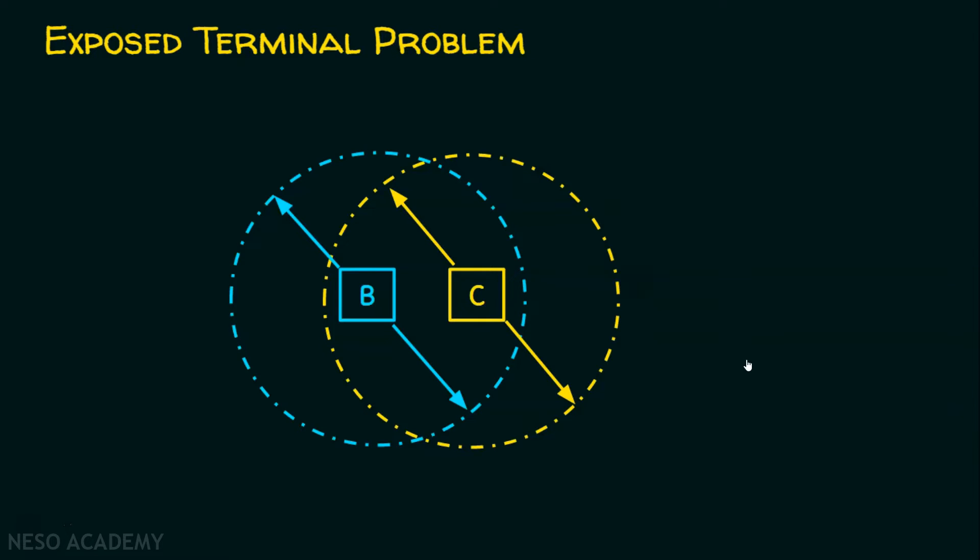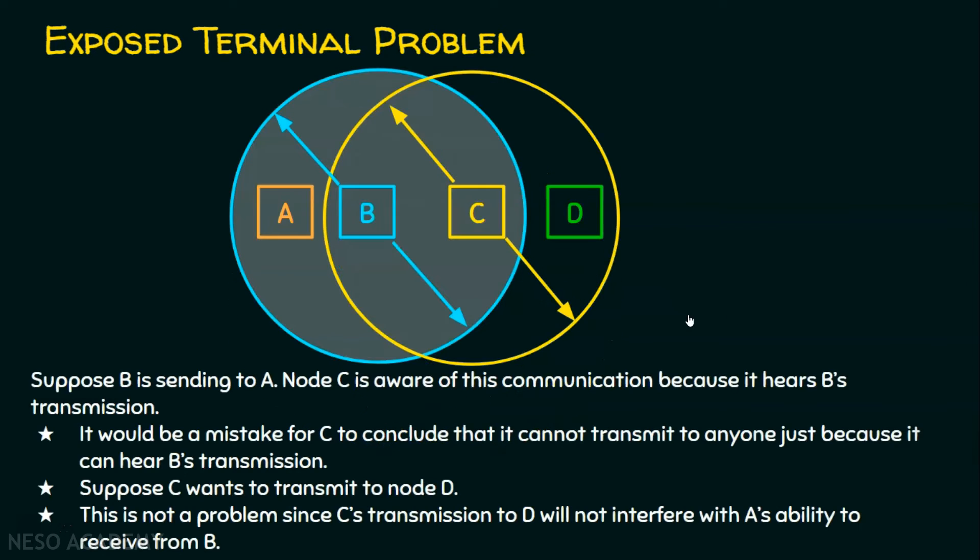Now, the real problem comes when another node A comes into the picture. Let's say there are two nodes coming into picture, they are A and D. Let's see what is the exposed terminal problem with the help of this scenario. In this scenario, we have node B which has its coverage area where A and C are in the same coverage area of B. For C, B and D are in the coverage area of C.